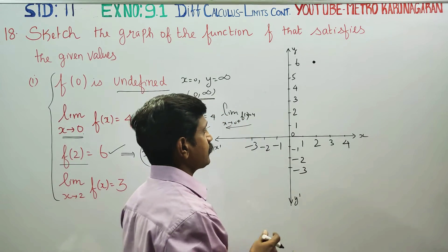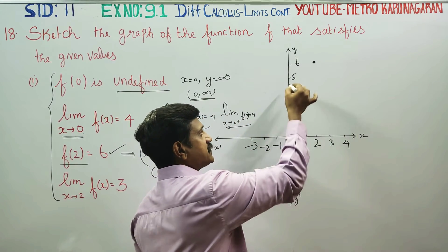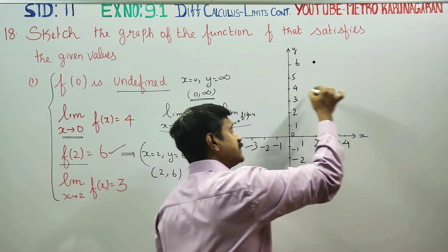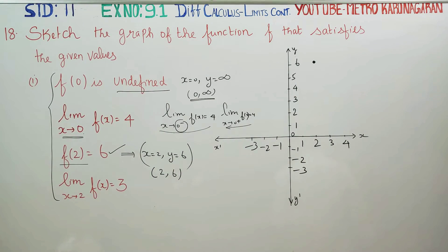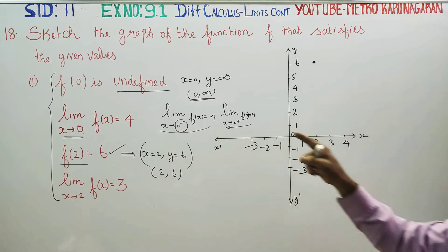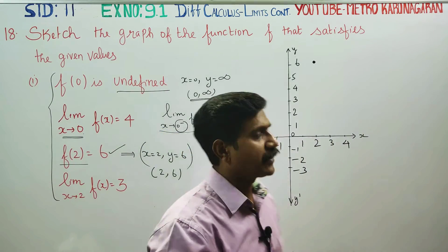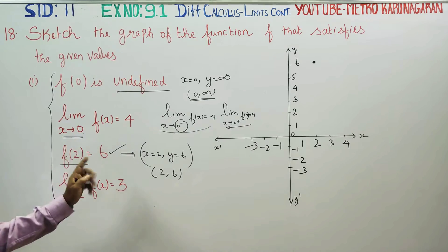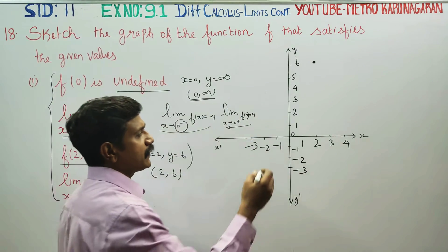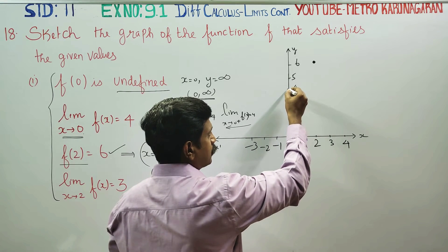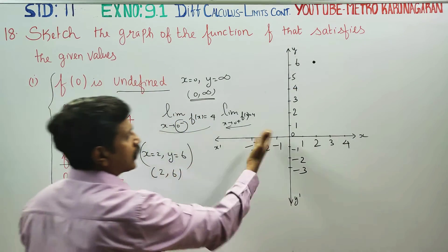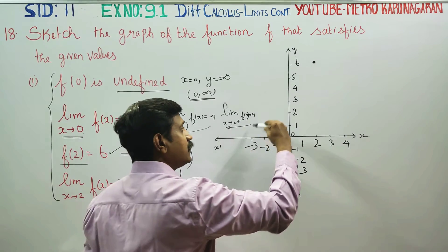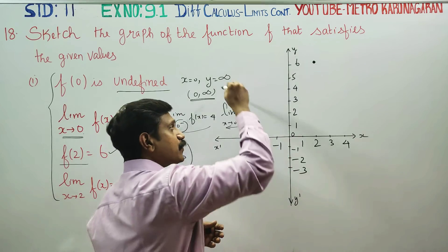Now there are two ways to draw this. One, straight lines approaching zero; or curves approaching zero. For example, I am using a straight line. So you can use a straight line or a curved line to represent this.